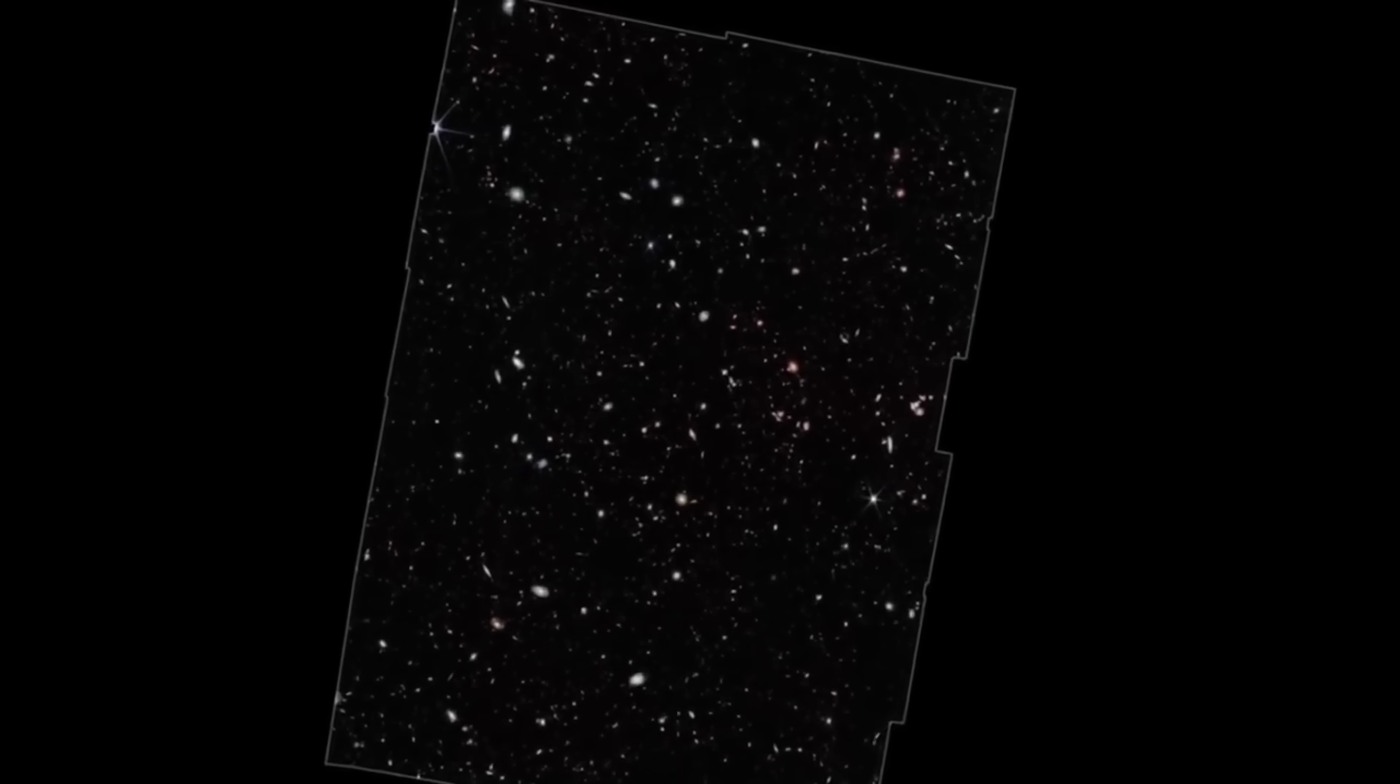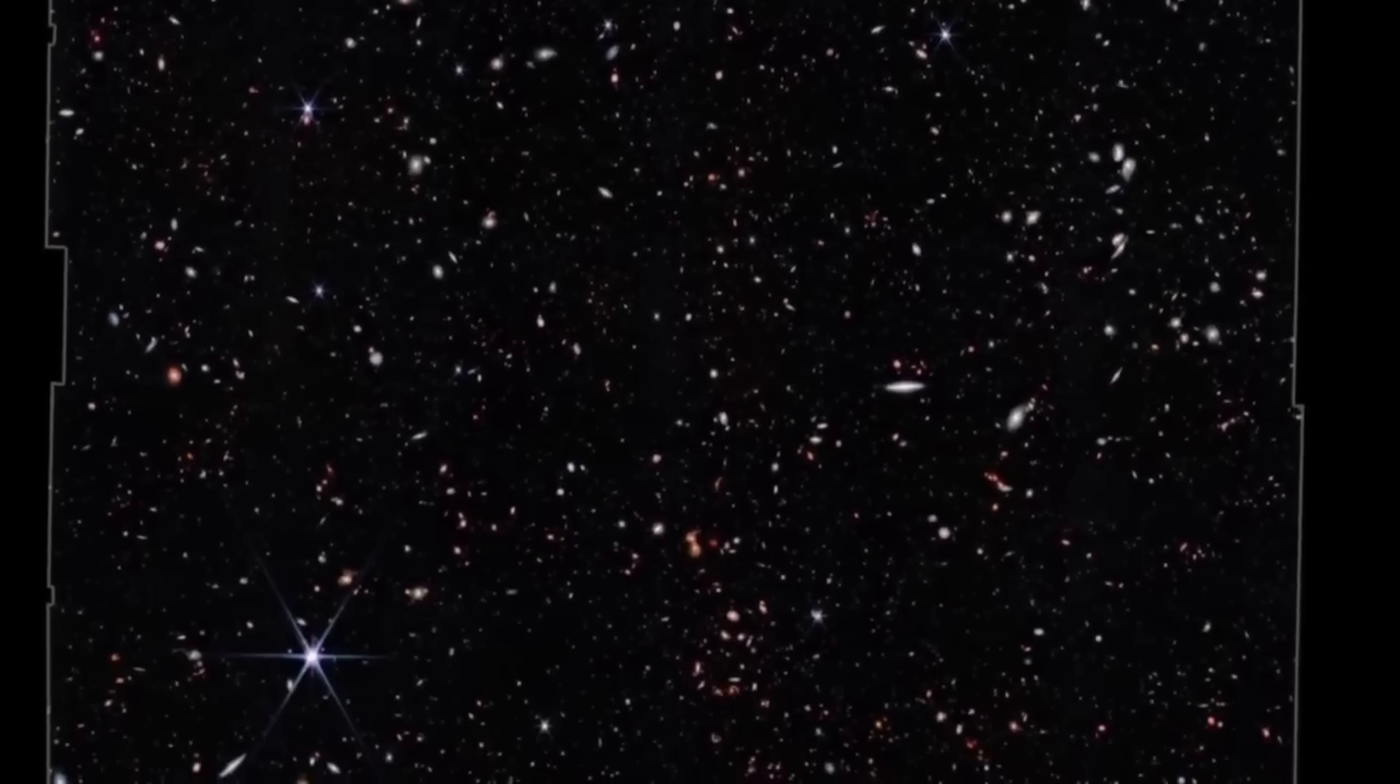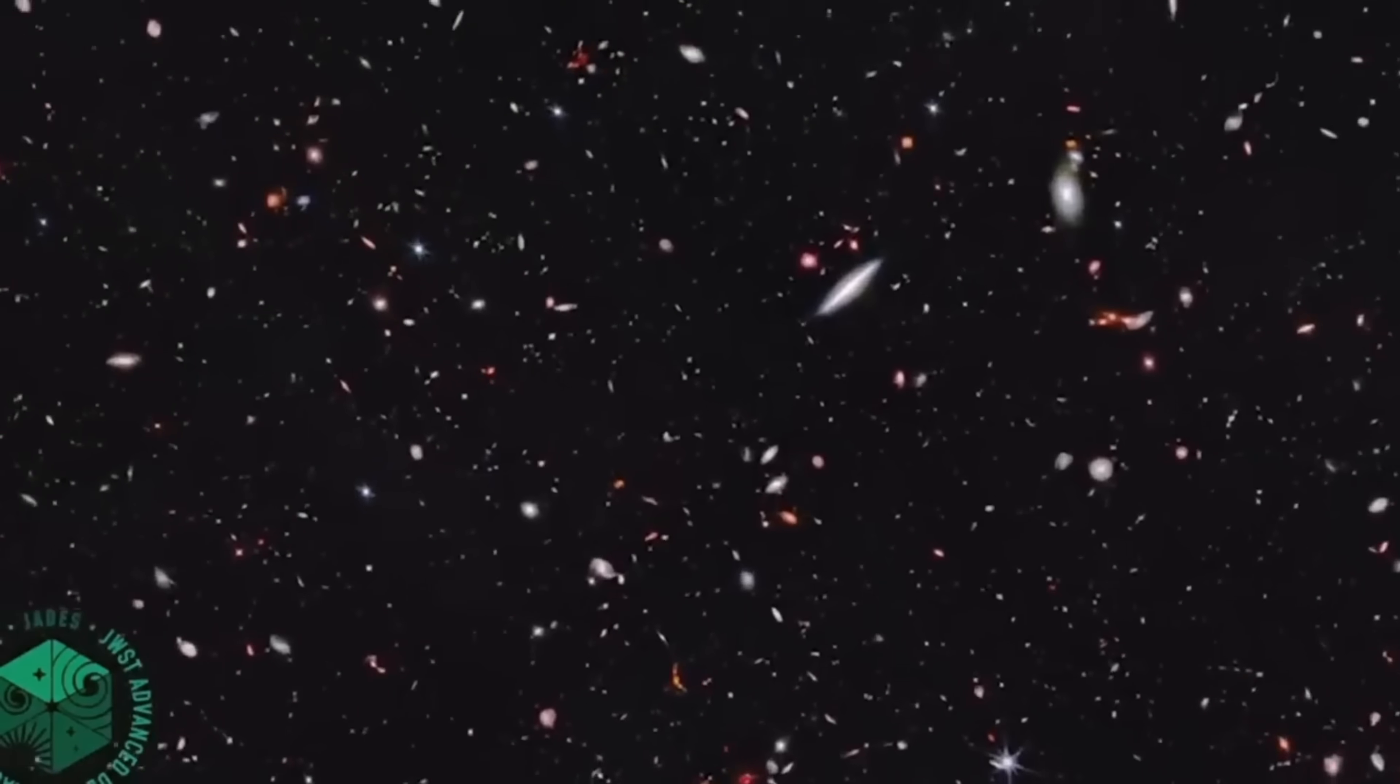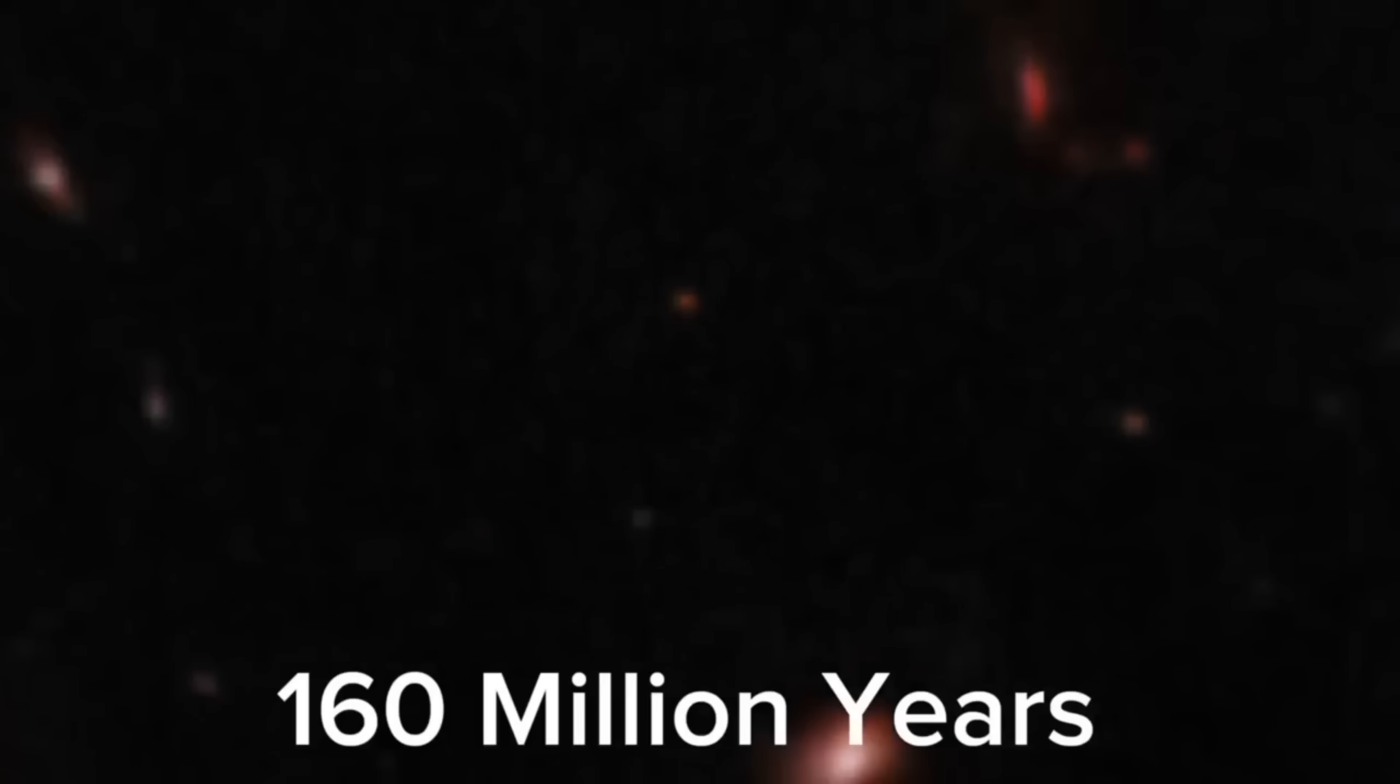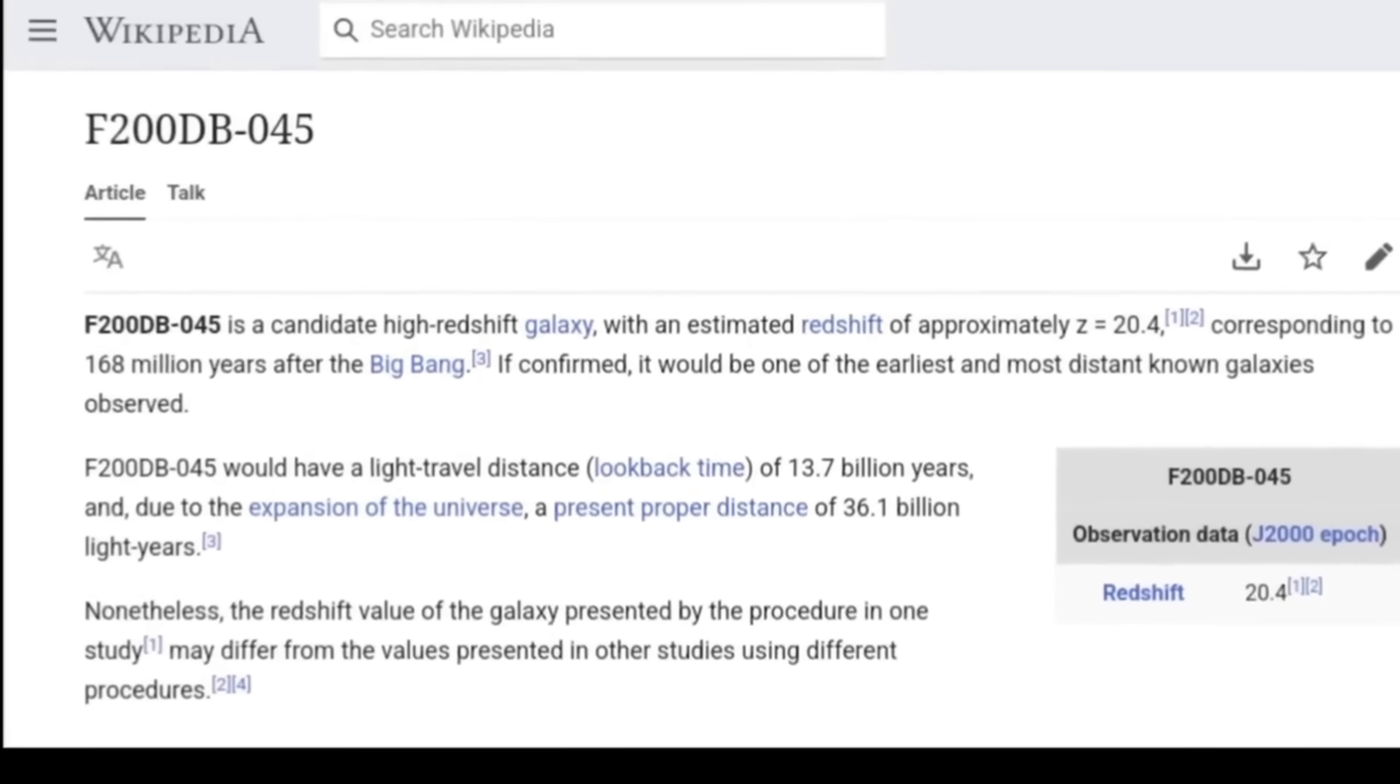This image shows the region of study of the James Webb Telescope Advanced Deep Extragalactic Survey. This area reveals new galaxies at record-breaking distances that Hubble could not see. One such galaxy named F200DB045 is potentially a high-redshift galaxy with an estimated redshift of 20.4, meaning it existed just 160 million years after the Big Bang. But this galaxy still has to undergo spectroscopic tests to be confirmed.